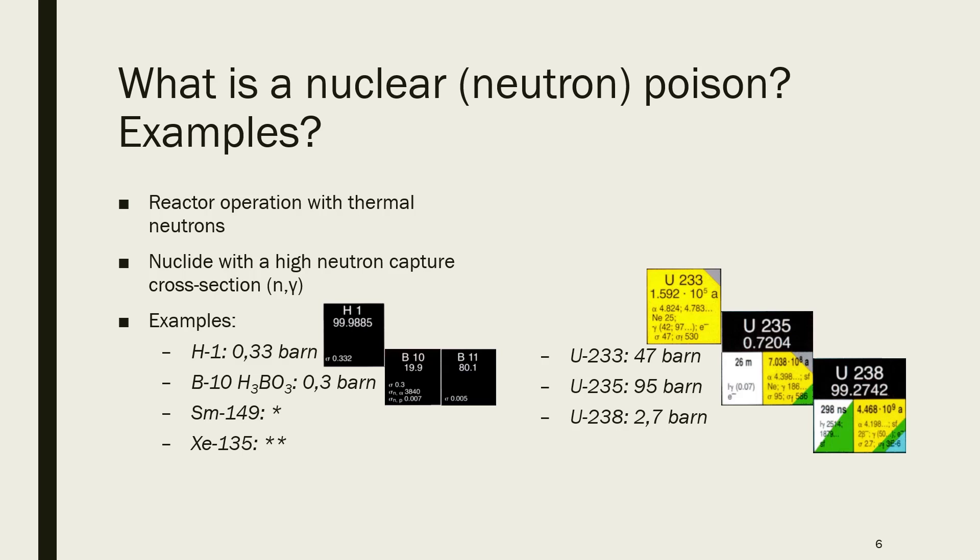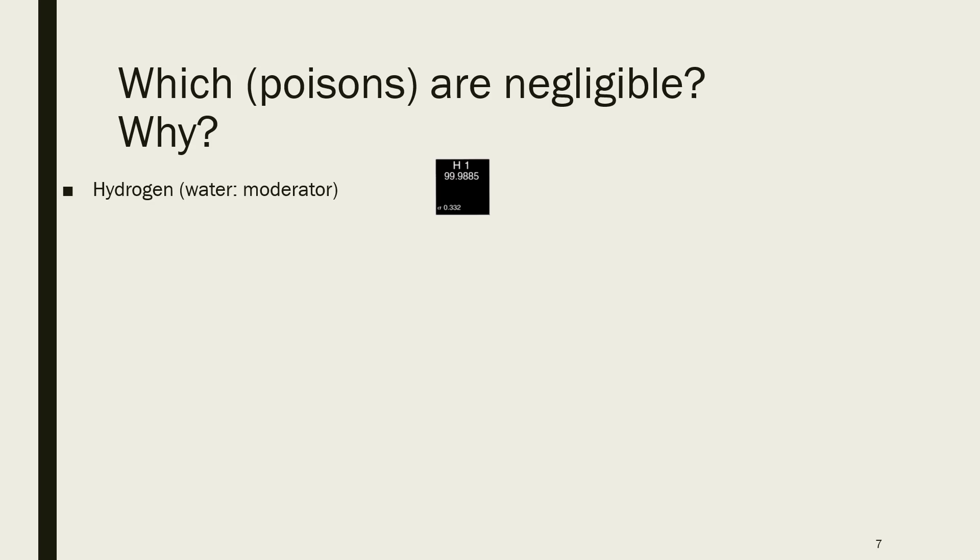Well, which neutron poisons are negligible? Water, because it's a moderator. It's always there. You can't get rid of it, and it's not that much. And it's also quite consistent. The boron impurities of your graphite control rods, it's there, but you can still pull the graphite control rods out of it. So you can make this neutron poison disappear. So this is negligible, and the neutron capture cross-section is not that high anyway.